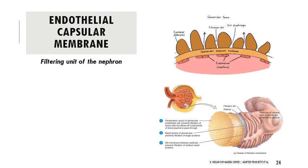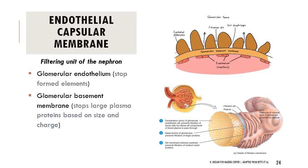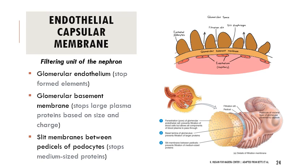The filtration slits, podocytes, and leaky capillaries all come together to form the endothelial capsular membrane — the filtering unit of the nephron. The glomerular endothelium stops formed elements from going through. The glomerular basement membrane stops larger plasma proteins based on size and charge. The slit membranes between the pedicels of the podocytes stop medium-sized proteins. Only water, really small ions, smaller amino acids, urea, uric acid, other protein metabolic byproducts like creatinine, and waste products should get through.